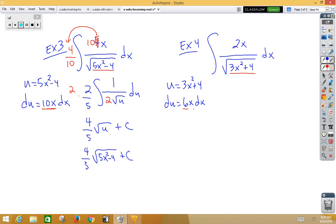Now, I want a 6x, I have a 2x. Well, it's pretty easy then to go ahead and multiply the inside by 3 if I divide the outside by 3. One-third integral. Now, there's my 6x dx, so that becomes du.